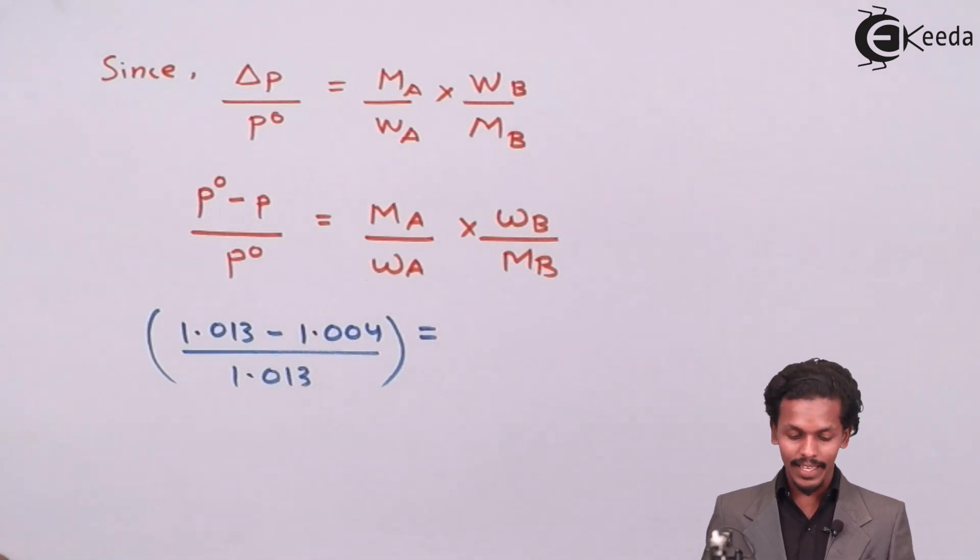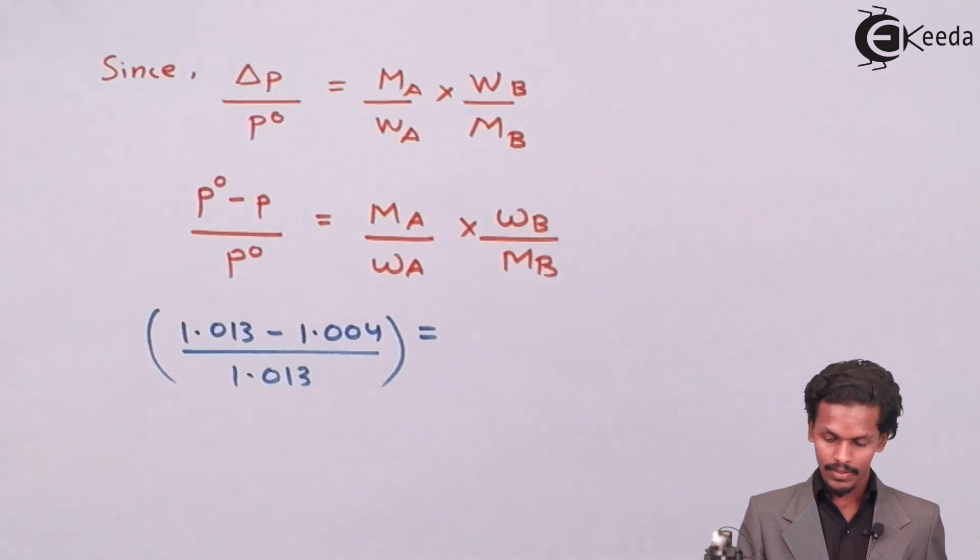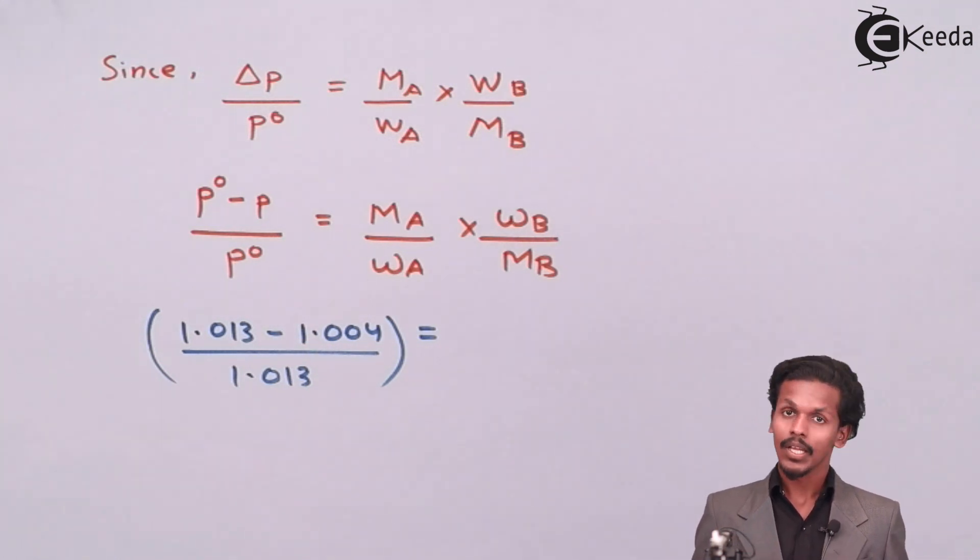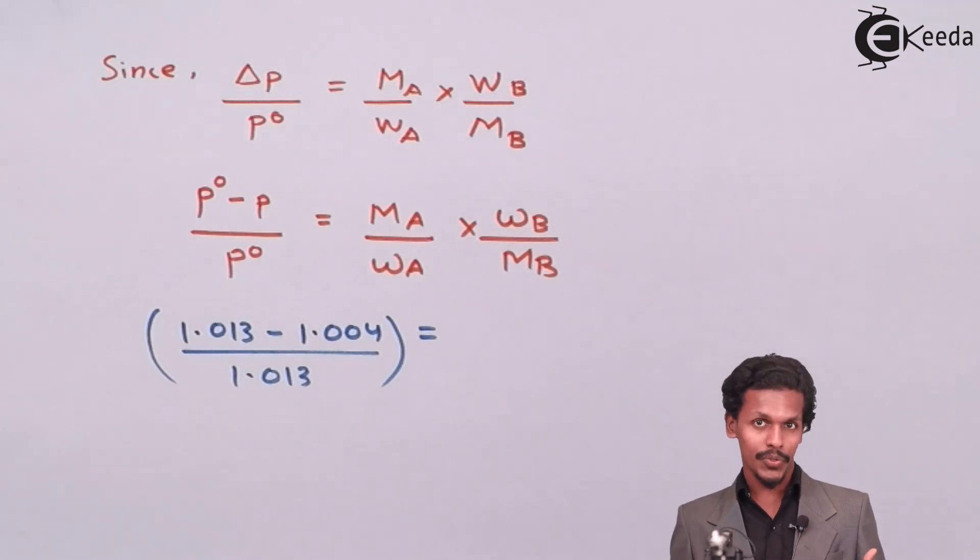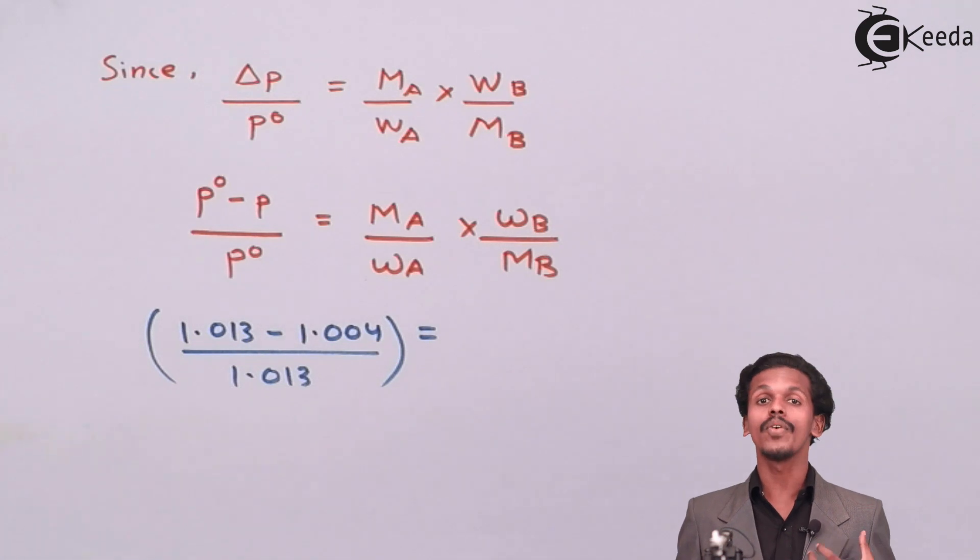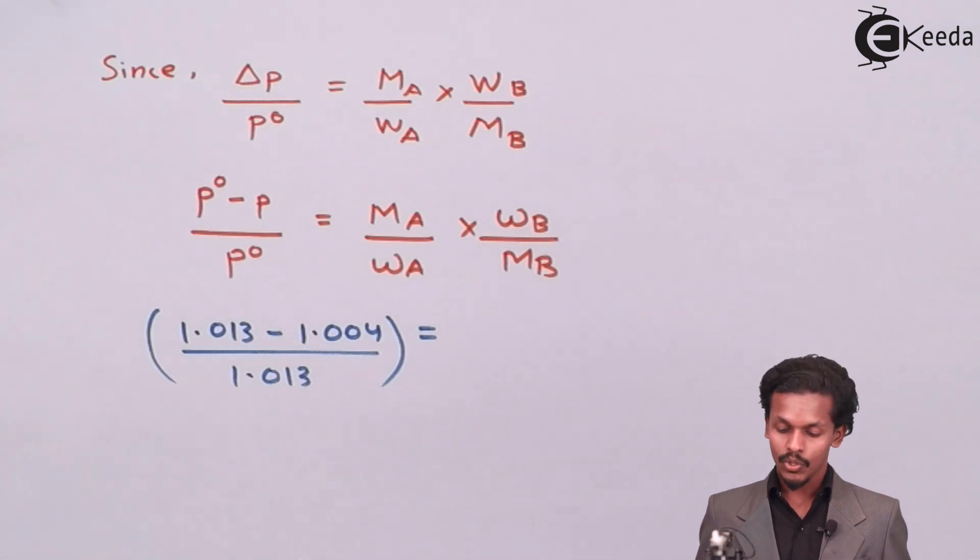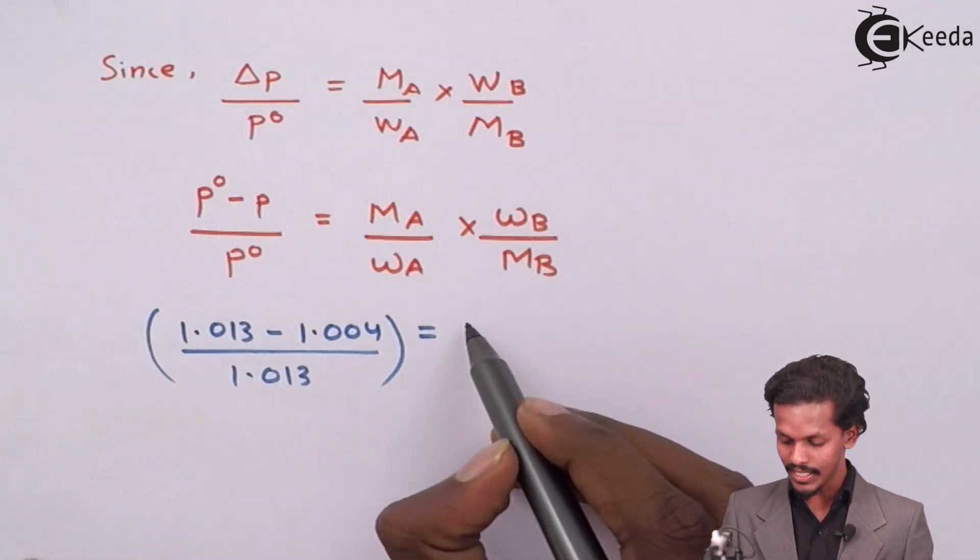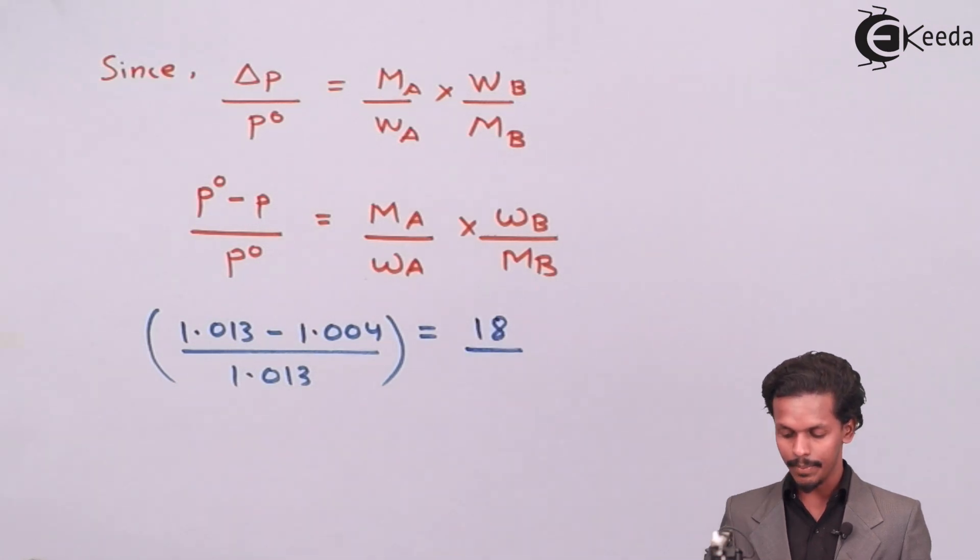Now the value of MA that we have got. In this case the MA will always be the molar mass of water itself. Why? Because it is a 2% aqueous solution and aqueous solution means it consists of water. So therefore the molar mass of water that is H2O which means H plus H plus O which makes an overall 18 gram per mole. Therefore MA has a value 18 gram per mole.